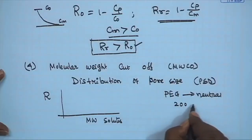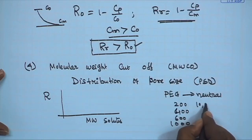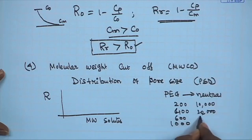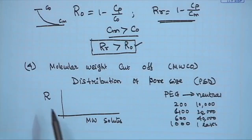In the market, PEG is available with different molecular weights starting from 200, 400, 600, 1000, 10,000, 20,000, 40,000 Dalton, 1 lakh Dalton, and so forth. We take different polyethylene glycols of various molecular weights at a particular concentration, prepare a solution, and then conduct the experiment in a small-scale laboratory filtration cell and measure its permeability. Similarly, we do experiments with different molecular weights of the solutes, measure the retention, and then plot the retention as a function of molecular weight on a log scale.